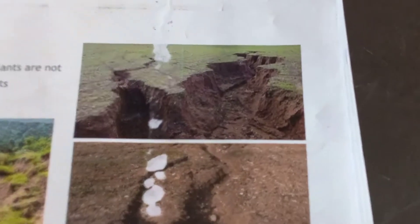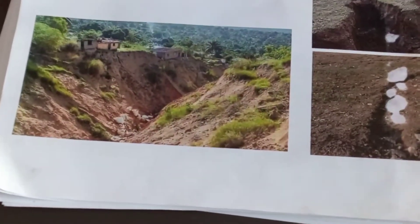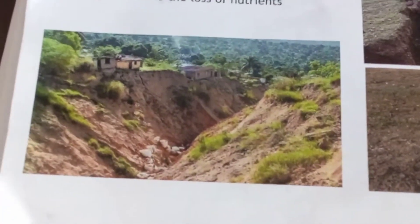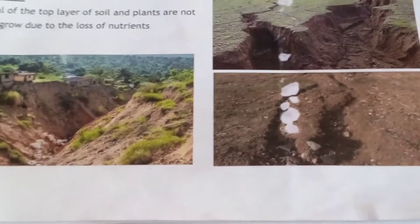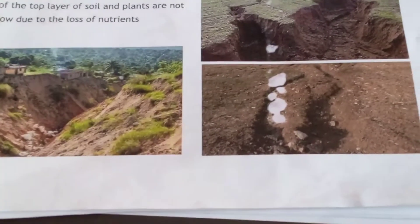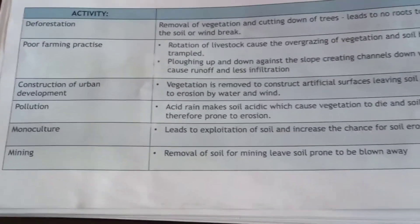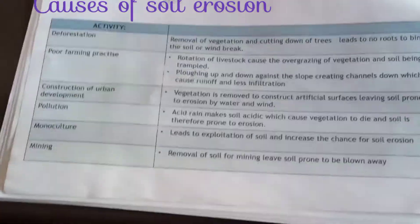Continuous erosion has also led to land degradation. Continuous erosion is also causing valley and donga-like structures. This is basically what soil erosion looks like.